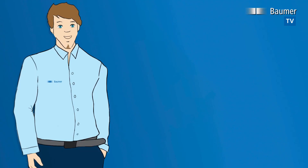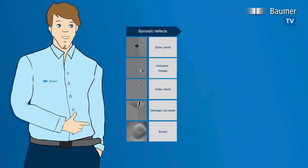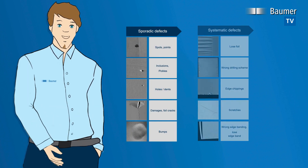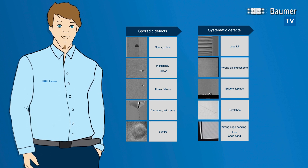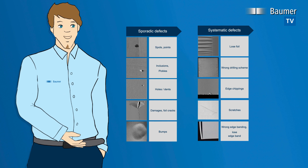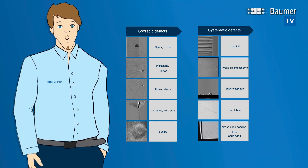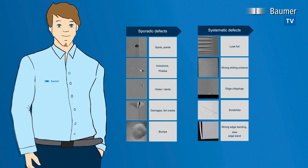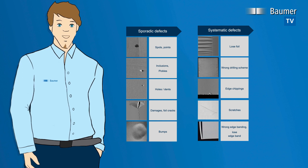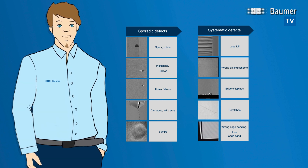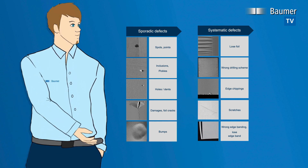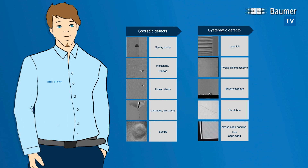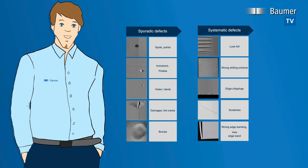In terms of defects, the inspection system distinguishes between sporadic and recurring, systematic defects. Systematic defects include, for example, scratches, edge tears, loose film due to gluing errors, incorrect drill hole scheme, or breakouts at drill holes. These can often be prevented by eliminating the corresponding causes. Unfortunately, one has to live with sporadic defects such as spots, dots, pimples, holes, or damage. They cannot be prevented, but the intolerable bad panels are sorted out in any case.